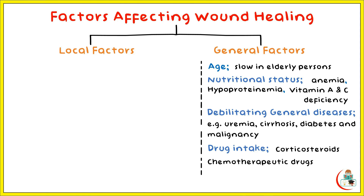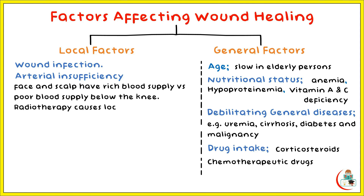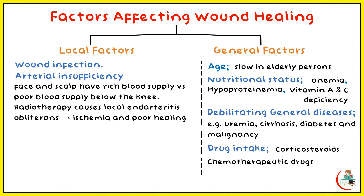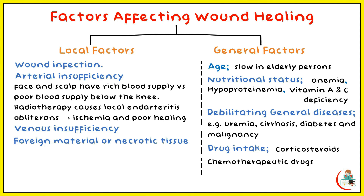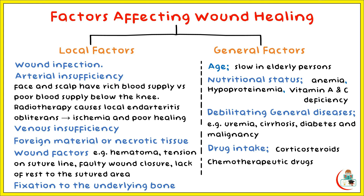The local factors include wound infection and arterial insufficiency. The face and skull have a rich blood supply, in contrast to poor blood supply below the knee level. Radiotherapy causes local endarteritis obliterans, leading to ischemia and poor healing. Venous insufficiency leads to edema and delays wound healing. The presence of foreign body or necrotic tissue prevents healing. Other local factors that impair healing include hematoma, tension on the suture line, faulty wound closure, lack of rest of the sutured area, and fixation to the underlying bone, which prevents wound contraction essential for proper healing.